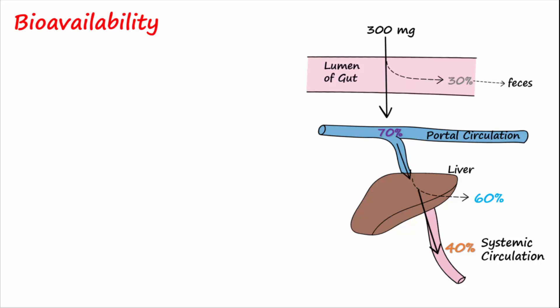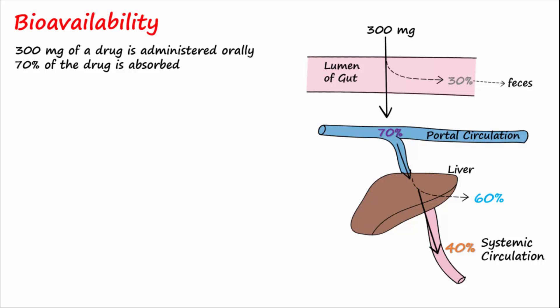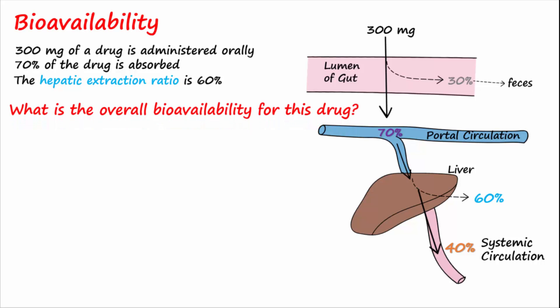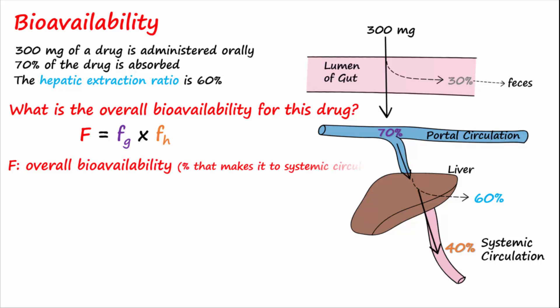Please attempt to answer the following question: given the following information — 300 milligrams of a drug is administered orally, 70 percent of the drug is absorbed, and the hepatic extraction ratio is 60 percent — what is the overall bioavailability for this drug? To answer this question, this important equation may be used. In the equation, F is the overall bioavailability and represents the percentage of drug that makes it to systemic circulation. FG is the amount of drug that is absorbed into portal circulation from the gut, which is 70 percent in our example.